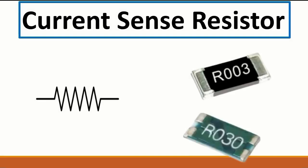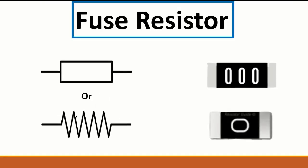Next we have fuse resistors. These are resistors we sometimes call fuse resistors because they show zero ohms — meaning very low resistance. You can see zero written as a single zero or three zeros; both mean the same thing. There are two resistor symbols you may encounter: the US symbol and the universal symbol.